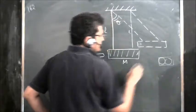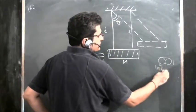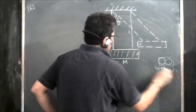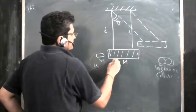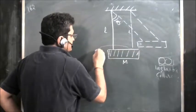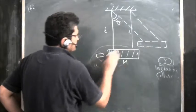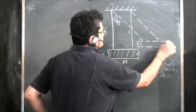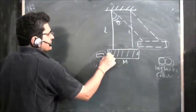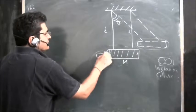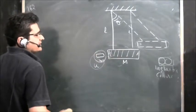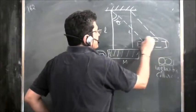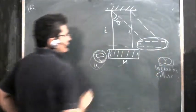In cases where the bullet gets embedded or two bodies stick together, it is an inelastic collision. Do not apply conservation of energy from the initial stage to the final stage, because there has been some loss of energy in between.